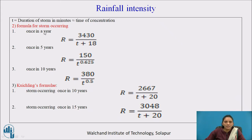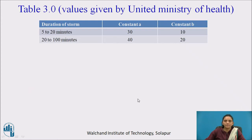There are formulas for storms occurring once in a year, once in 5 years, and once in 10 years. Kuchlings formula for a storm occurring once in 10 years is R_i = 2667 / (T + 20), and once in 15 years is R_i = 3048 / (T + 20). From Table 3, if storm duration is 5–20 minutes, A = 30 and B = 10; if duration is 20–100 minutes, A = 40 and B = 20.